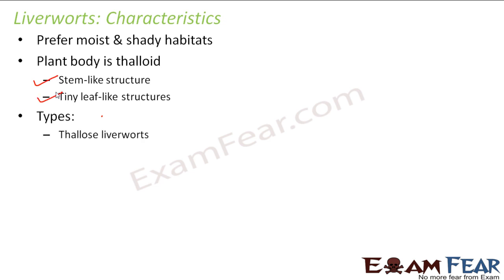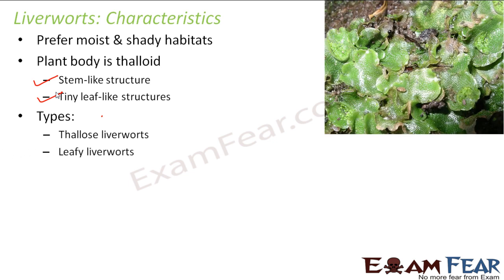There are two types of liverworts depending on whether they have leaves or not. One is thallus liverworts and the other is leafy liverworts. Thallus liverworts are those which do not have leaf-like structures. You can see a picture displaying the thallus liverworts — the example is Lunularia cruciata. In that picture these structures do not carry anything like a leaf; it is just the thallus which is displayed, which is why they are called thallus liverworts.